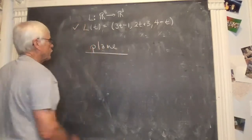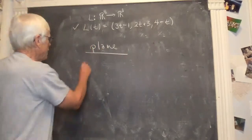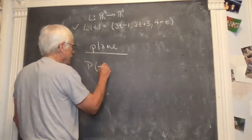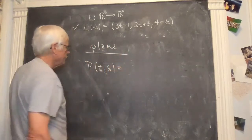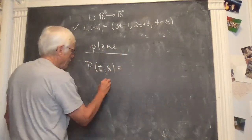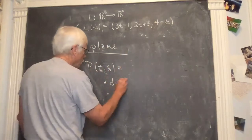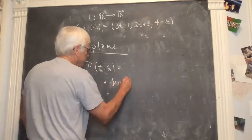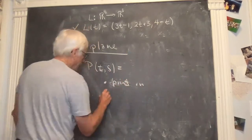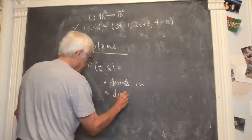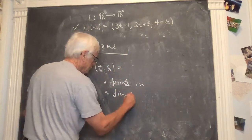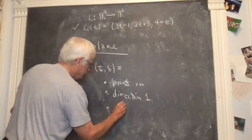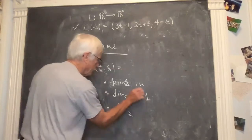This was given in parametric form, so I'm going to look at my plane parametrically. So P of T and S is equal to, and now to do this, I need a direction one. Let's do this. I need a point on. I need direction one. And I need direction two. Let me just simplify. Dir one and dir two.